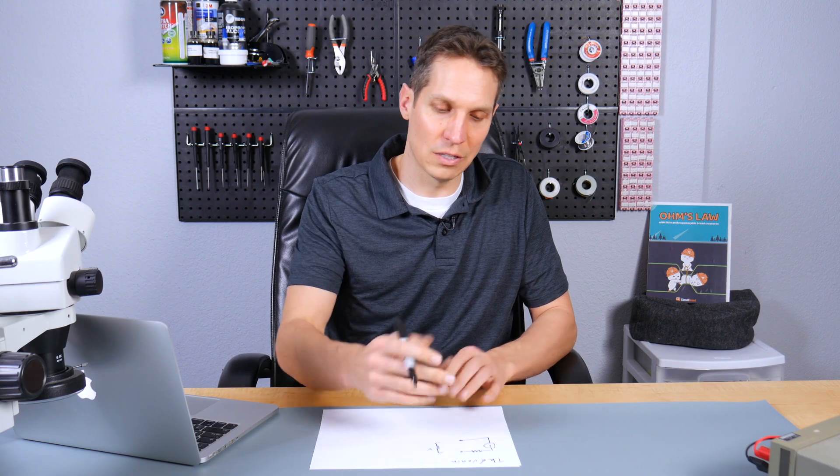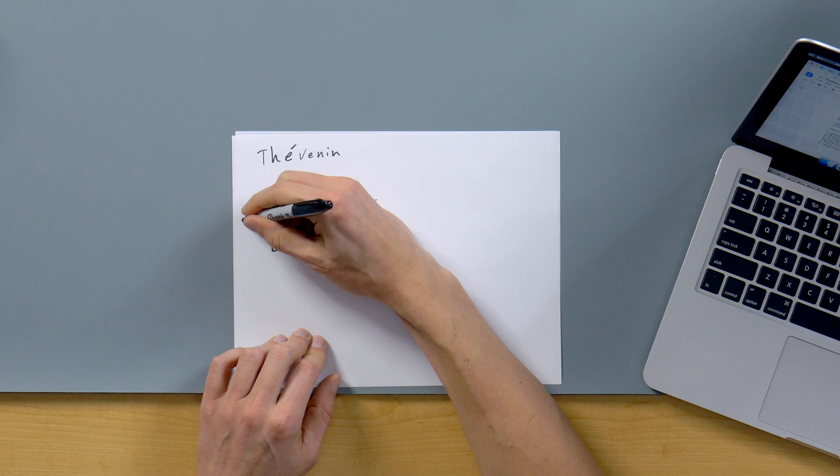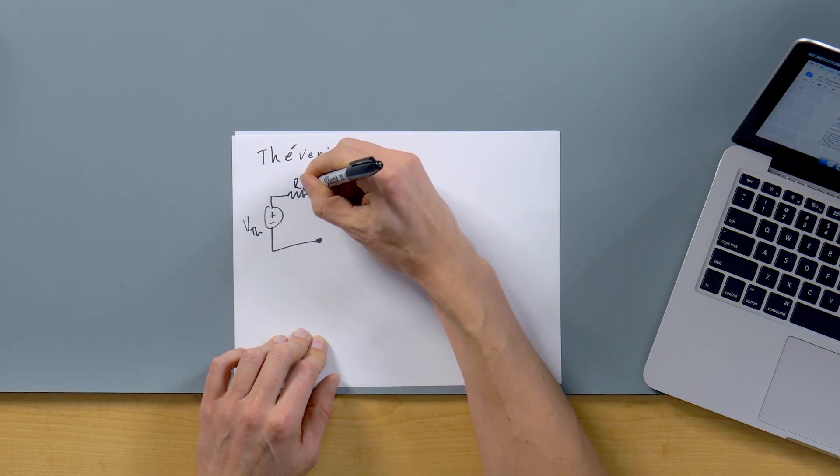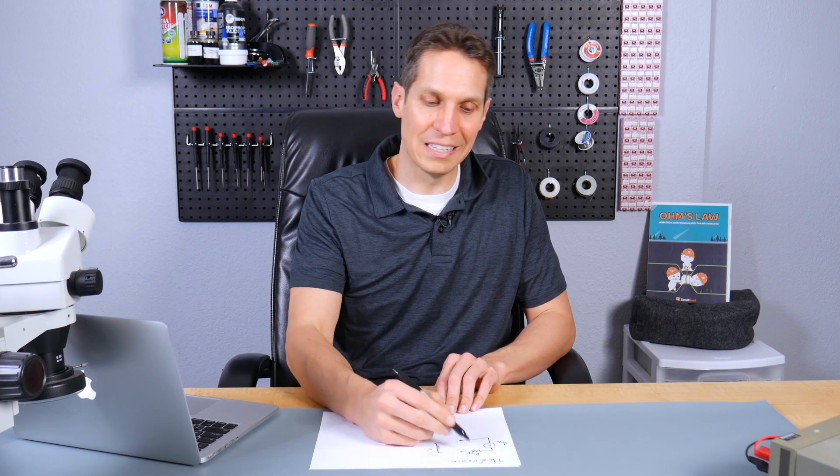And usually when you do this, you label this like voltage Thevenin and resistance Thevenin. And so what we're going to go over today is basically how you find these, and it's really not that complicated, as long as you remember the different steps. So let's go over those steps really quick, and then we'll go over one or two samples and show it in action.